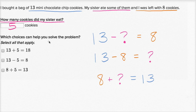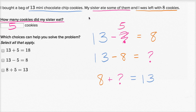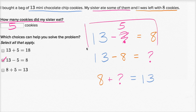Now they ask: which choices can help you solve the problem? We know the question mark is five. We know that 13 minus five is equal to eight — that's a true statement describing what happened, so that one could help. 13 plus five equals 18 — not that one. And 13 minus five equaling eight is the useful equation here. Because if I started with 13 cookies and my sister ate five, I'd be left with eight.